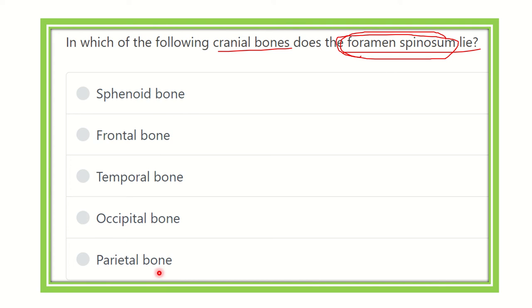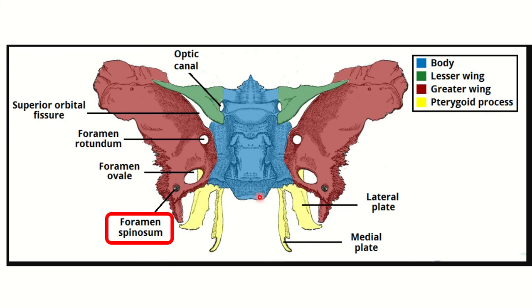In this picture we can see different foramina. First, this is the optic canal, then this is the superior orbital fissure, then this is the foramen rotundum, and behind the foramen rotundum there is the foramen ovale, and finally this is the foramen spinosum. We have to find out the name of the bone in which it lies.